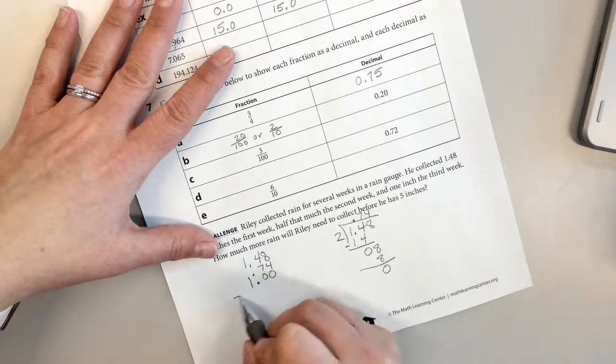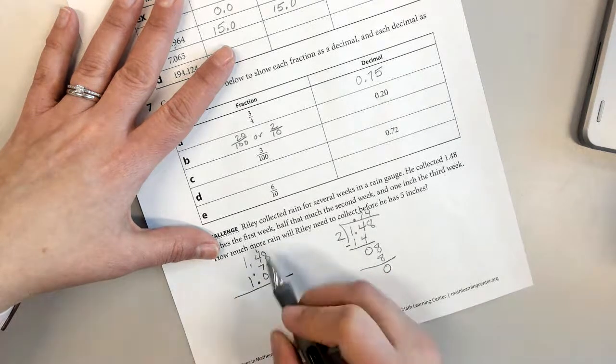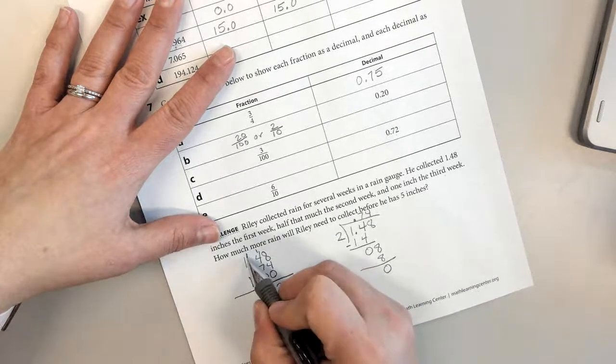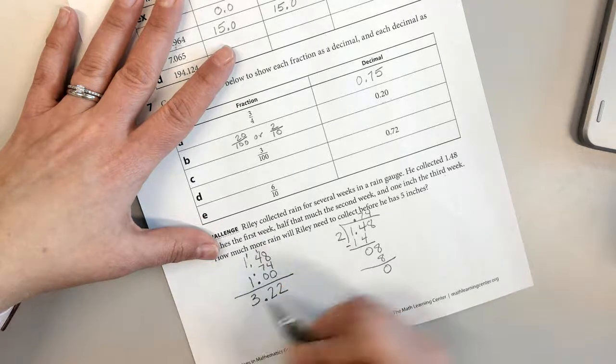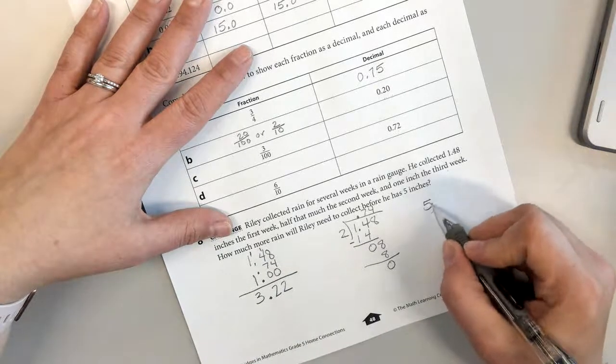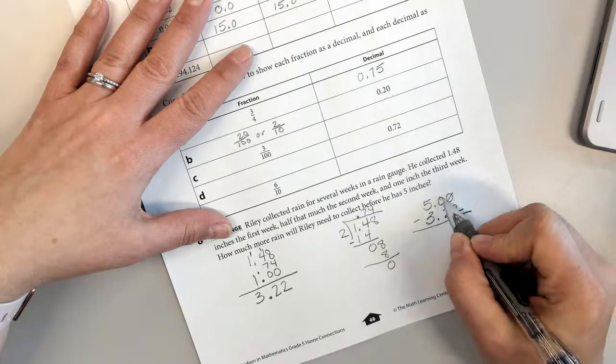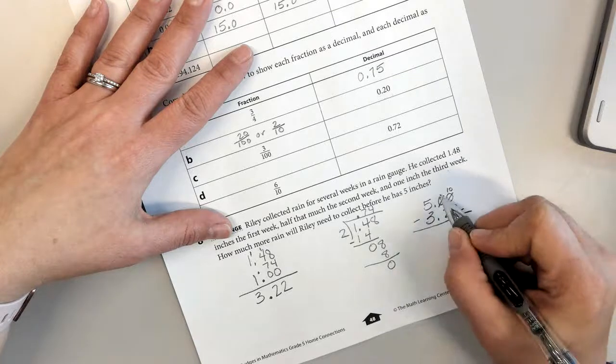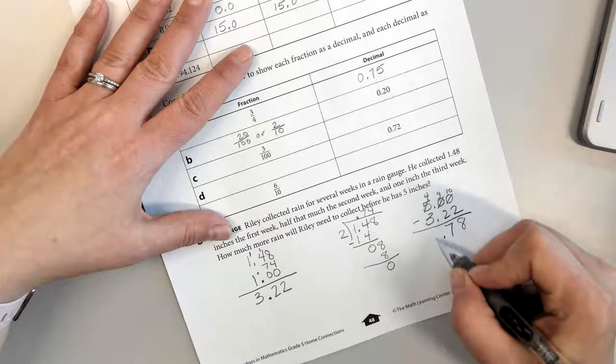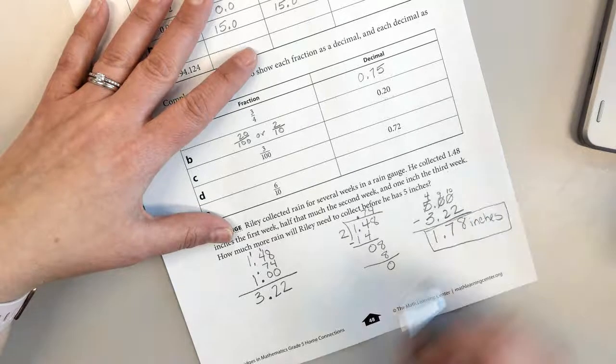So now I need to add this all up. Eight plus four plus zero is twelve. Carry my one. Seven plus four is eleven. Twelve plus zero, twelve. Carry my one. One plus one plus one is three. Now they want to know how much more rain he needs to collect before he has five inches. So I have to subtract this from five inches to find out the difference. I can't subtract that, so I need to borrow. Ten minus two is eight. Nine minus two is seven. Four minus three is one. One and seventy-eight hundredths inches more.